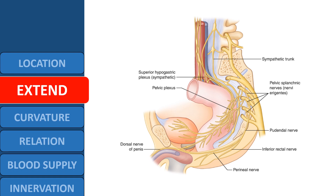Moving to its extent — as already mentioned, it extends from the recto-sigmoid junction to the anal canal. In its course, it is not straight. In humans, it begins going backward and downward, then vertically, and then changes direction again to forward and downward.